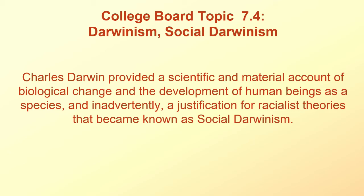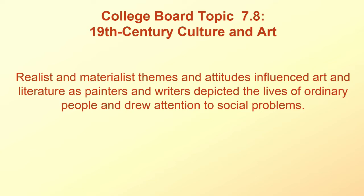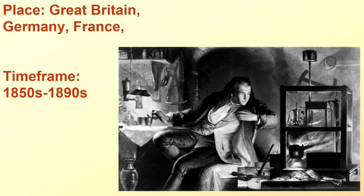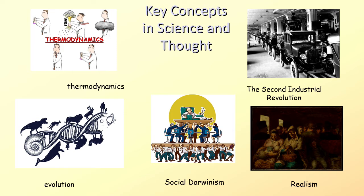College Board Topic 7.8: Nineteenth-Century Culture and Art. Explain the continuities and changes in European artistic expression from 1815 to 1914. Realist and materialist themes and attitudes influenced art and literature as painters and writers depicted the lives of ordinary people and drew attention to social problems. Place: Great Britain, Germany, France, the 1850s to the 1890s. Key people: Charles Darwin, Emile Durkheim, Gustav Le Bon, Max Weber, and Herbert Spencer. Key concepts: Thermodynamics, Evolution, Social Darwinism, Realism, and the Second Industrial Revolution.